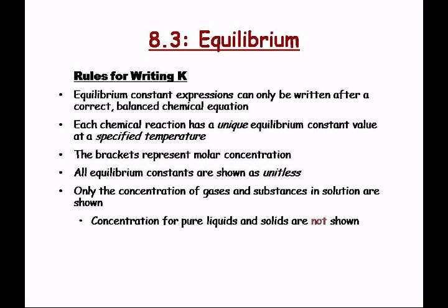One of the many things in chemistry you want to remember is that brackets around a substance represent molar concentration — moles per liter. That's a chemist's favorite concentration unit. Whenever you see brackets around a solution, that means it's in molar concentration. Equilibrium constants themselves are unitless. You're going to have concentrations over concentrations, and even if you do get units in your answer, you just drop them, because K is a unitless number.